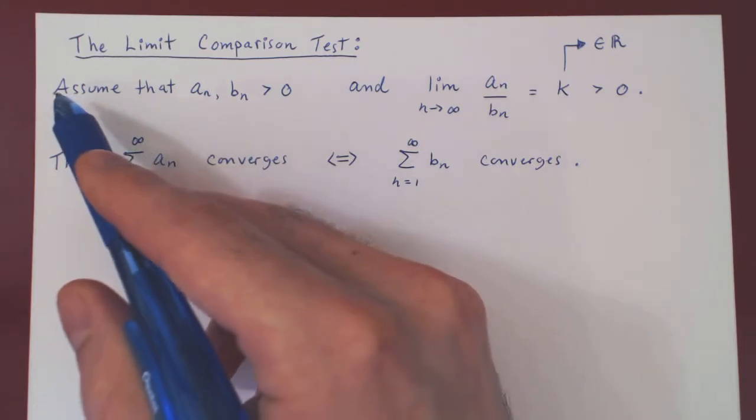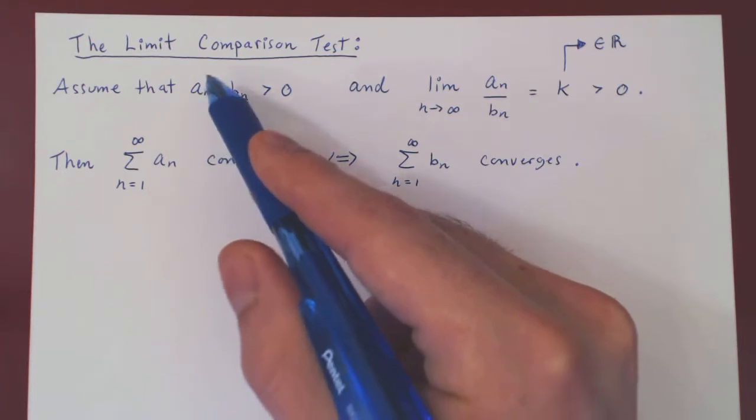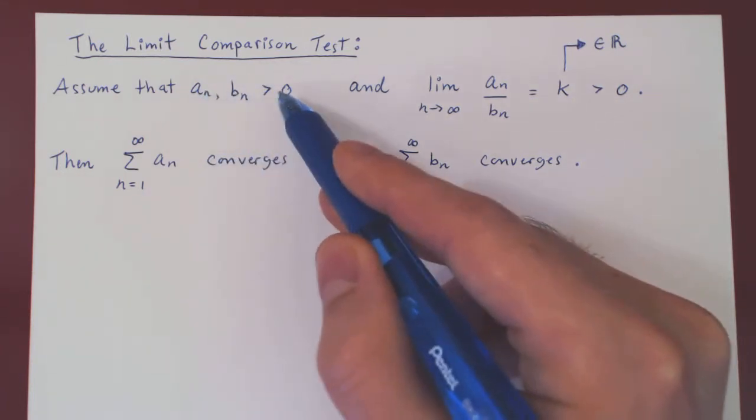So here are the assumptions. We assume that we have two positive sequences, an and bn. So a1, a2, a3, and so forth, b1, b2, b3, and so forth, are all strictly positive.